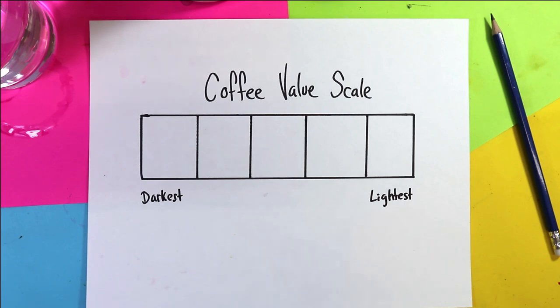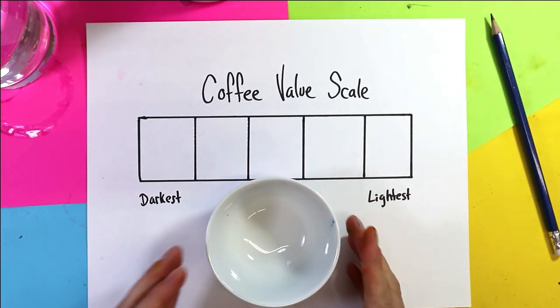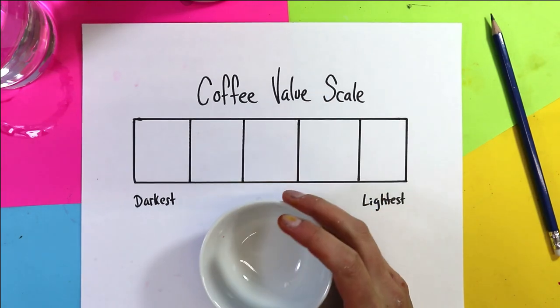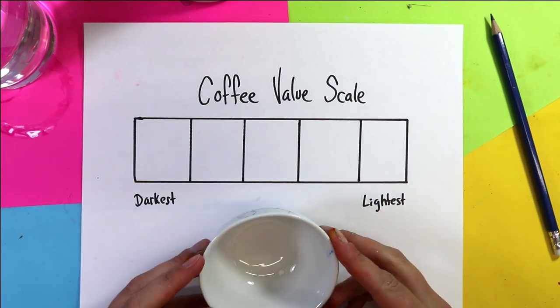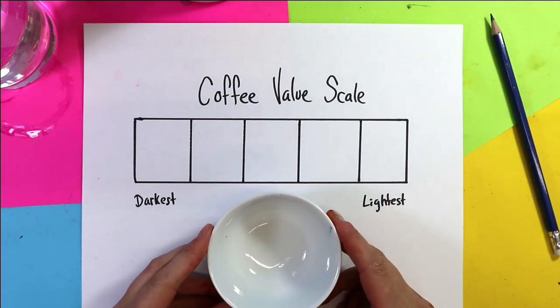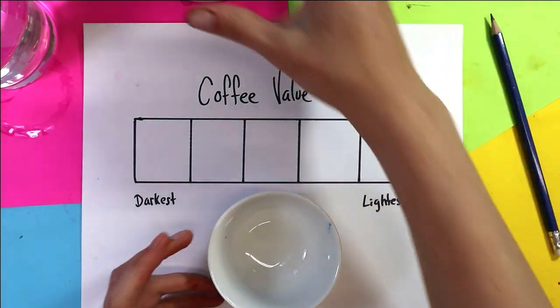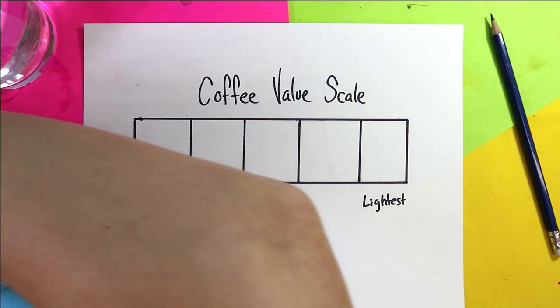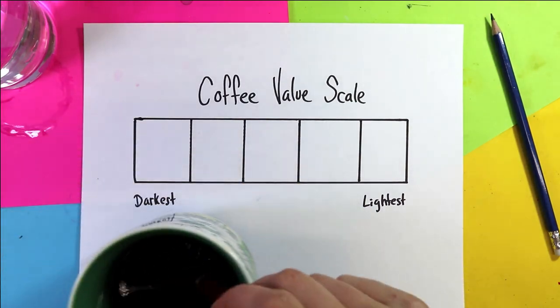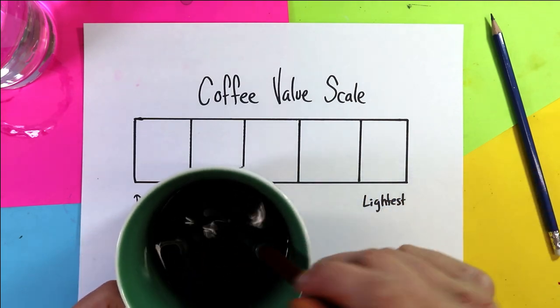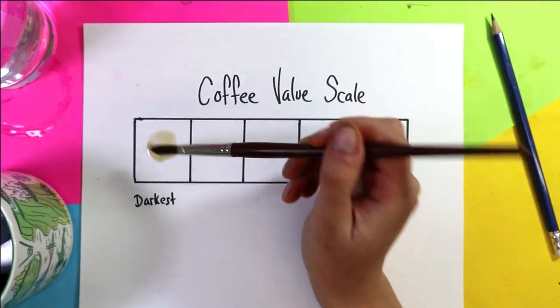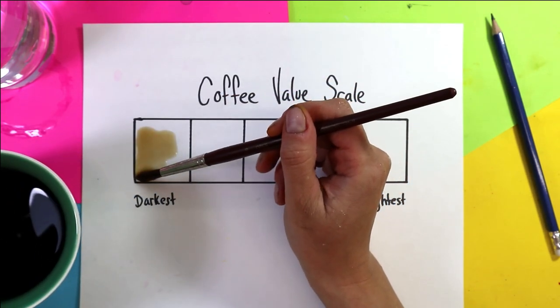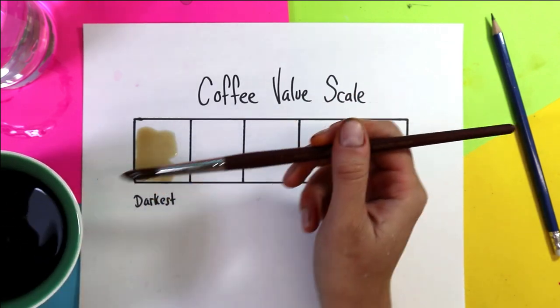And to make the coffee a different value I'm just going to have a separate little container here. This is just a dipping bowl. You can use whatever you have. You can even use something out of your recycling container for mixing in. And what I'm going to do first is I'm just going to use the coffee straight out of my mug to make the darkest value. So the darkest value is going to be the coffee at its full concentration. So I'm going to dip my paint brush right into the container and I'm going to add it on my darkest value.